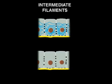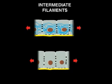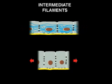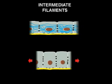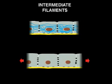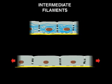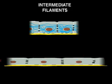These cables of intermediate filaments have a high tensile strength. Without these filaments, stretching or pressure on the epithelial sheet would cause it to rupture.